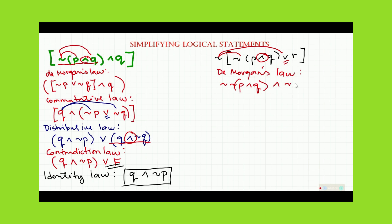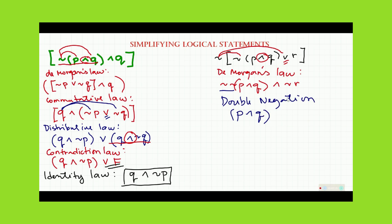Since we have a double negation here, we apply the double negation law. Negation negation of P simplifies to just P. So the simplified statement is: P and Q, in parentheses, and negation R.